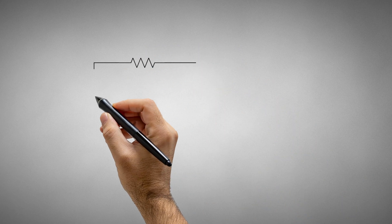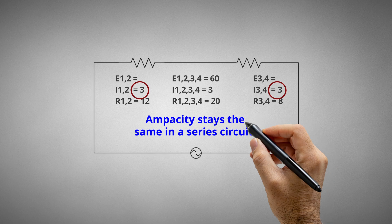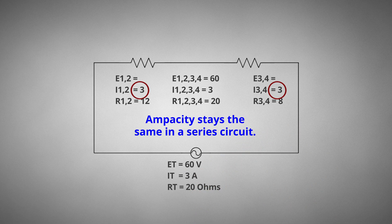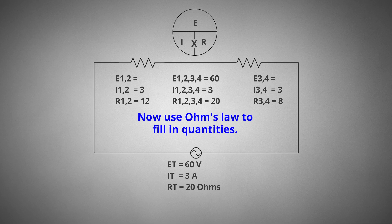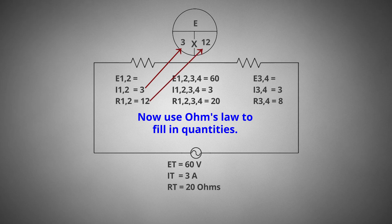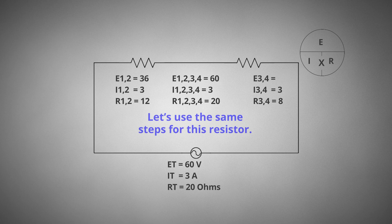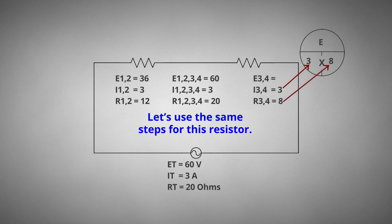Ampacity stays the same in a series circuit. Since I1-2 and I3-4 are in series, they both will have the same value as the total ampacity. Now use Ohm's Law to fill in the quantities. Since we know two quantities, we can use simple Ohm's Law to find the values. I1-2 equals 3 and R1-2 equals 12, therefore 3 times 12 equals 36 volts. I3-4 equals 3 and R3-4 equals 8, therefore 3 times 8 equals 24 volts.